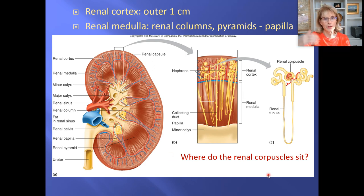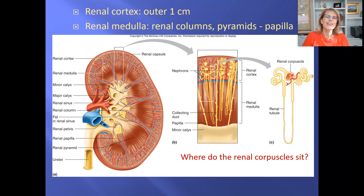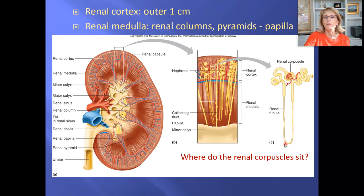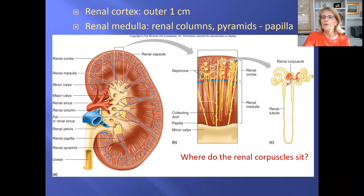The fluid starts at the renal corpuscle, springs out of the glomerulus because of filtration, and gets caught by Bowman's capsule. Then it goes through the proximal convoluted tubule, where a lot happens. Then it goes down the descending limb of the nephron loop into the renal pyramid, comes back up the ascending limb, and then enters the distal convoluted tubule.